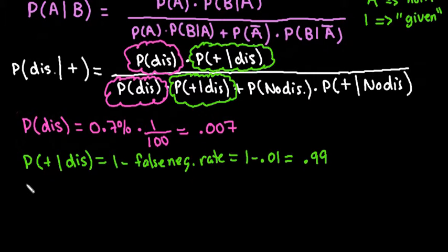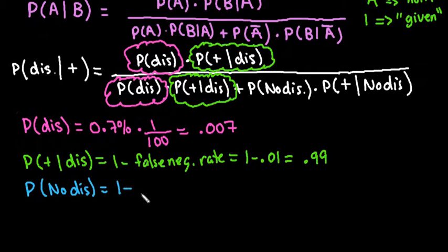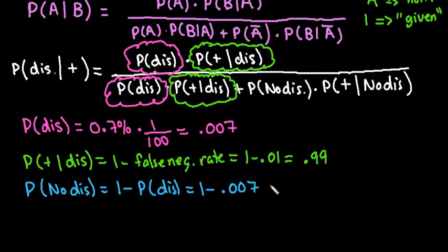The next thing we want is the probability of no disease, which is just the complement of the probability of the disease: 1 minus 0.007, which equals 0.993. So where we have the probability of no disease, we'll plug in 0.993.